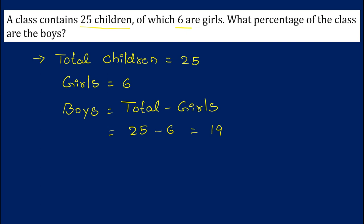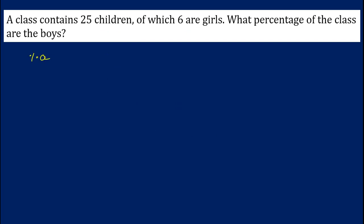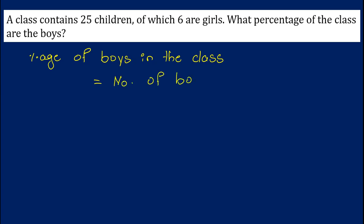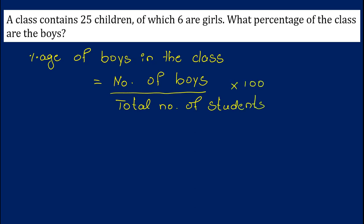From the question, we have to find what percentage of the class are boys. The percentage of boys is given by the formula: number of boys upon total number of students, into 100 percent. Now substitute the values: number of boys equals 19, total number of students equals 25, into 100 percent.